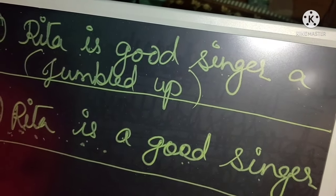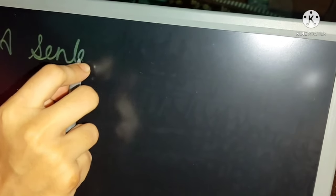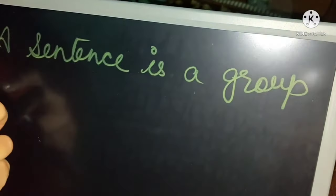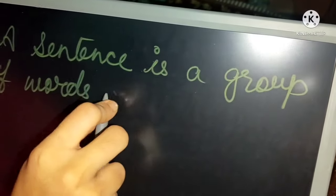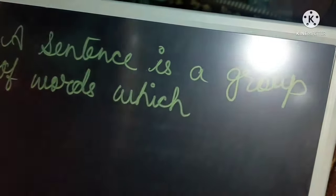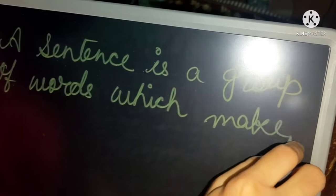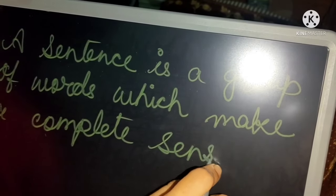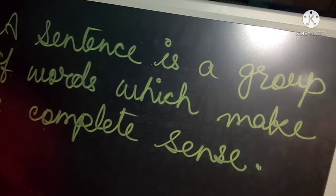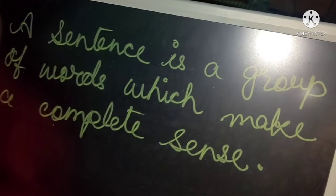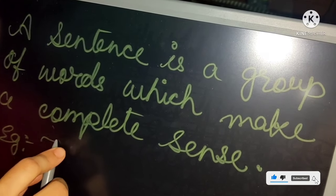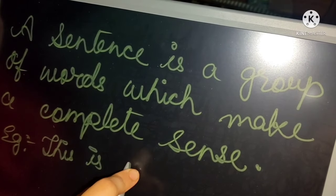So we have come to know that a sentence is a group of words which makes a complete sense. You can take a screenshot of it if you wish. A sentence is a group of words which makes a complete sense. For example: 'This is a book.'